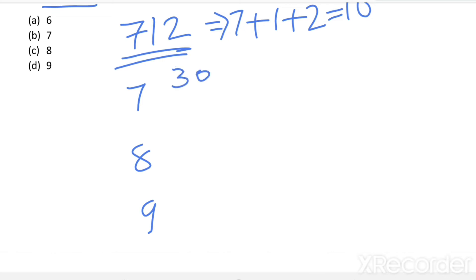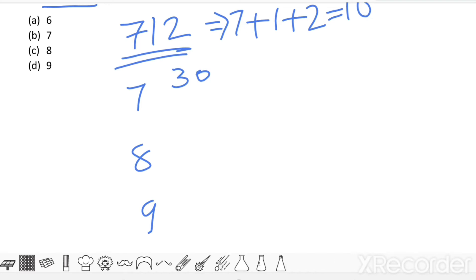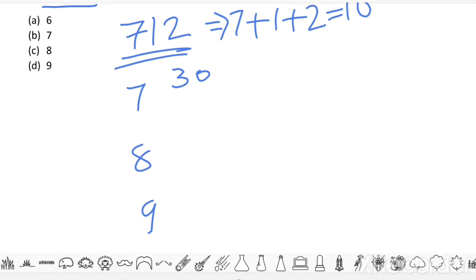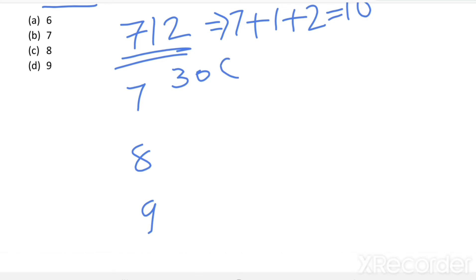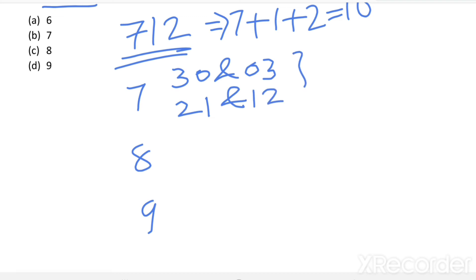For hundreds digit 7: combinations are (7, 3, 0), (7, 0, 3), (7, 2, 1), and (7, 1, 2) — each giving a digit sum of 10. That gives a total of 4 numbers with hundreds digit 7.